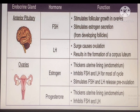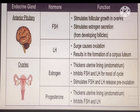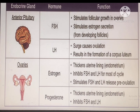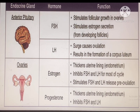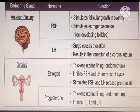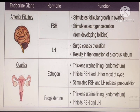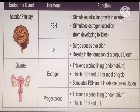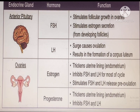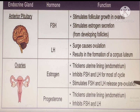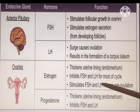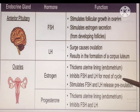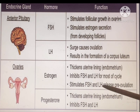What about the anterior and posterior pituitary gland? For reproductive functions from the anterior pituitary gland, first is FSH or follicle stimulating hormone. It stimulates follicular growth in ovaries and stimulates estrogen secretion from developing follicles, without which it would not be possible to have the menstrual cycle or the ovulation process in human reproduction. Next comes LH or luteinizing hormone. From the ovaries, two types of important hormones are secreted. Estrogen thickens the uterine lining or endometrium and inhibits FSH and LH before ovulation.